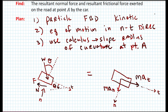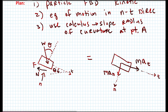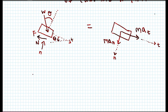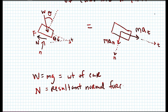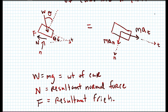The normal-tangential coordinate system is established on the vehicle at point A. We treat the vehicle as a particle and draw the free body diagram and kinetic diagrams. We define: W = mg (weight of the car), N = resultant normal force, and F = resultant friction force on the road.